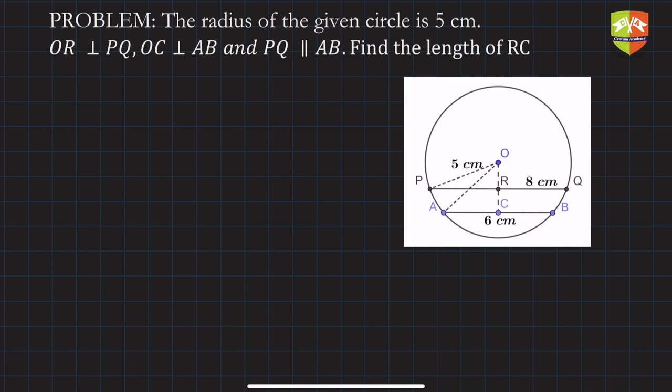OR is perpendicular to PQ, and OC is perpendicular to AB. You have to find out the length of RC. So again, as we learned in the previous question, we have to do the same thing here.